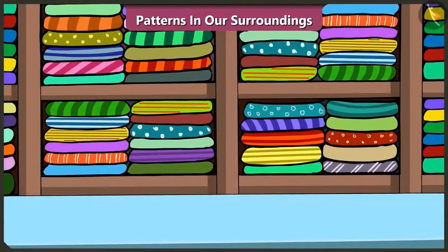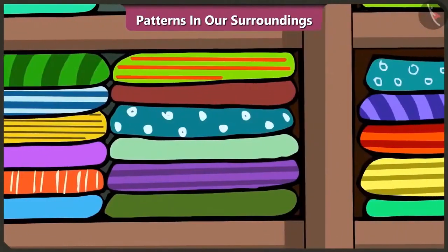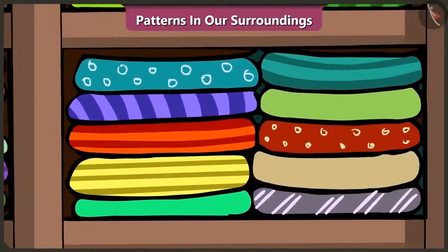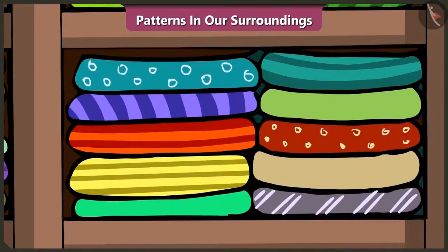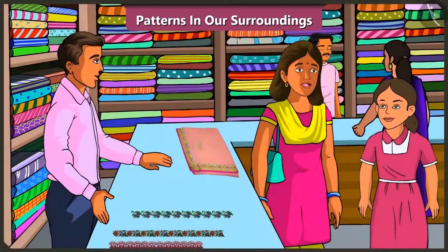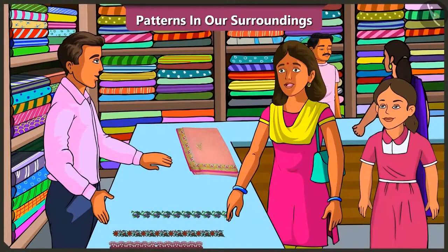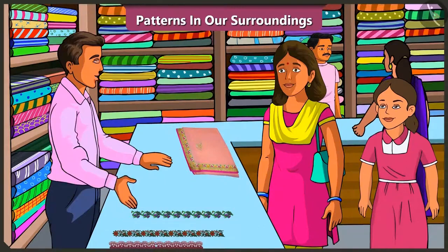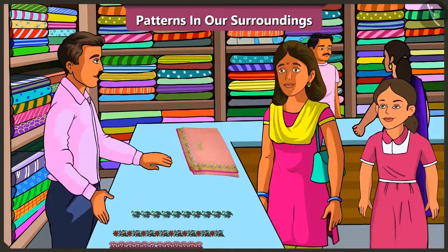Look, Vinny — all the clothes here have some pattern on them. Oh yes, in all these clothes some shapes or designs have been repeated again and again. Rightly said, Vinny. Brother, we like this patterned lace. Please use this one on my saree. Okay, you can collect your saree tomorrow. Thank you, brother.